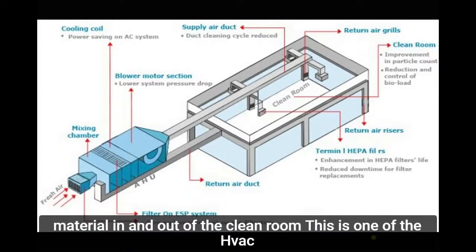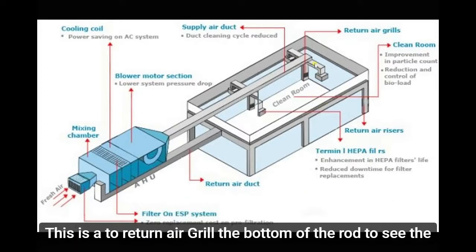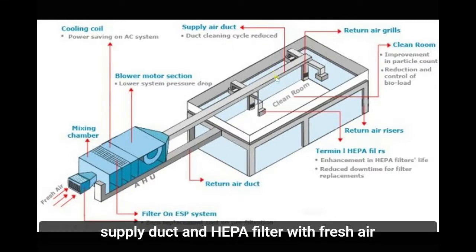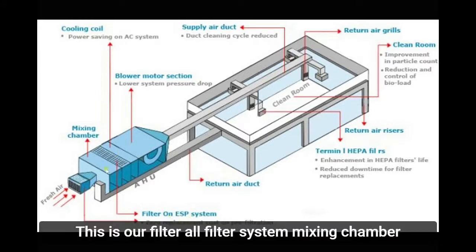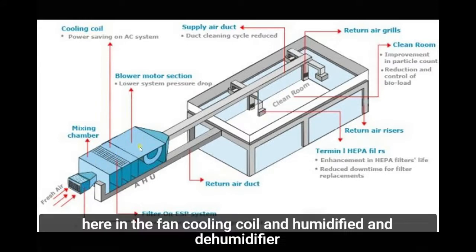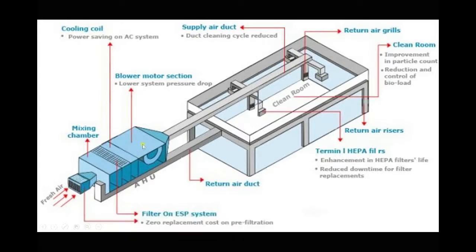Also considered is the heat gain and movement of people and material in and out of the clean room. This is one example of an HVAC system for the clean room: here is the return air grille at the bottom, the supply air duct with HEPA filter, the pressure gauge, the filter system, mixing chamber, fan, cooling coil, and humidifier or dehumidifier.